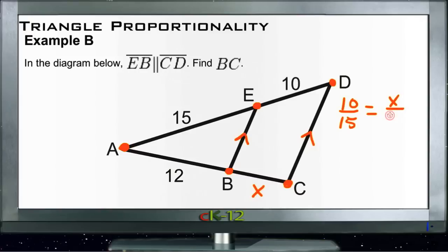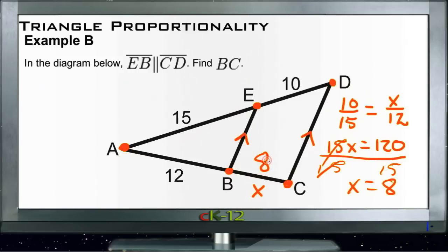So then we can cross multiply and we'll get 15X equals 120. And if we divide 120 by 15, we get our trusty handy-dandy calculator up here: 120 divided by 15, we get 8. So divide both sides here by 15 gives us X equals 8. So BC then must be 8 units.